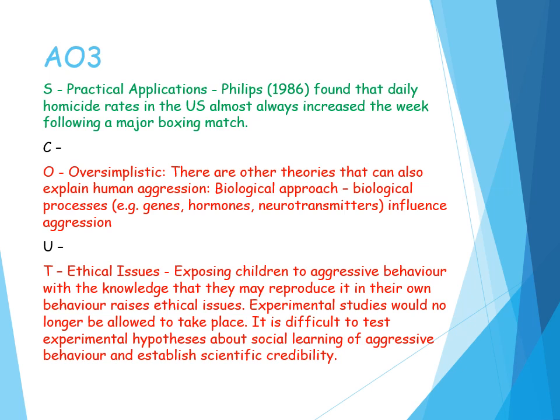However, the theory is oversimplistic. Other theories may offer a better explanation of human aggression, such as the biological approach — including the MAOA gene, testosterone, serotonin, and the limbic system. This demonstrates that social learning theory may not be a complete explanation, and we may need to take an interactive approach between nature and nurture. Social learning theory is environmentally reductionist, breaking aggression down to reinforcement, and therefore sits firmly on the nurture side of the nature-nurture debate, ignoring any biological influences.